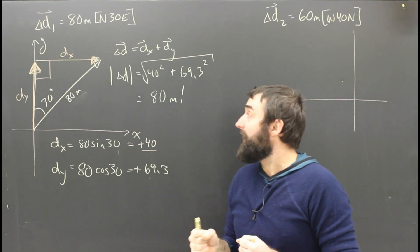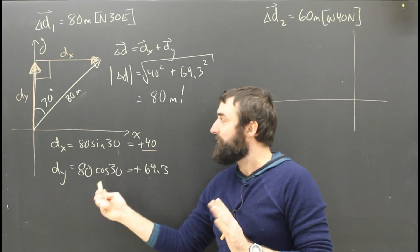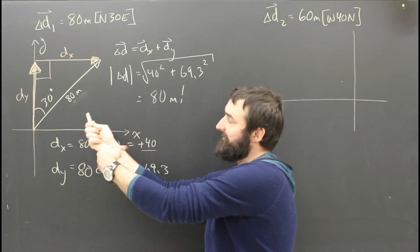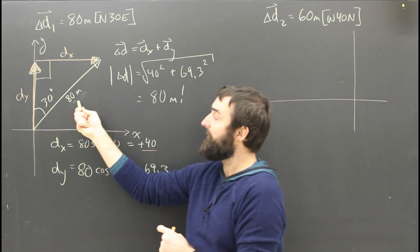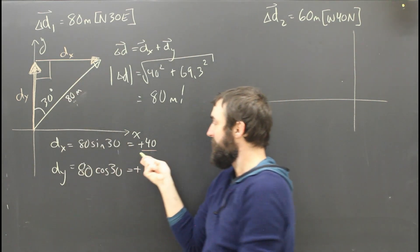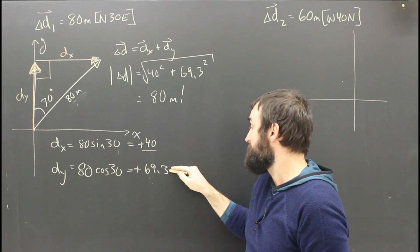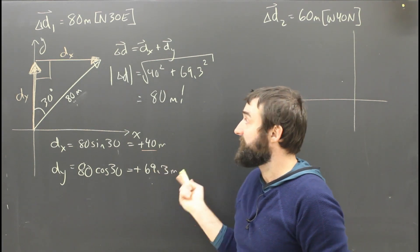So hopefully that all kind of makes sense. Components are part of a vector. How much of this vector is in the x direction? 40 meters. How much of this 80 meters was north? 69.3 meters. Don't forget the plus or minus.